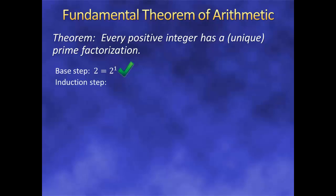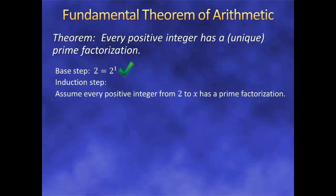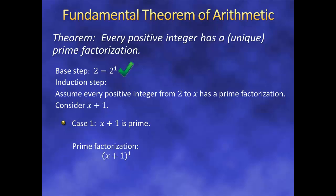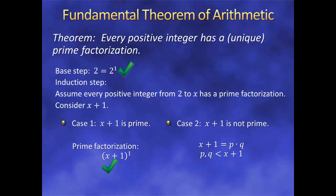Now for the induction step. Suppose that every positive integer from 2 to x has a prime factorization. Consider the number x+1. There are two cases. First, x+1 could be prime — if so, then we know its prime factorization: (x+1)¹. On the other hand, perhaps x+1 is not prime. Then by definition, x+1 can be split into two factors, call them p and q, neither of which is x+1 itself or 1. That means each of p and q is less than x+1. And since we assumed every number from 2 to x has a prime factorization, so should p and q. So the prime factorization for x+1 will just be the prime factorization of p times the prime factorization of q. That does it — our proof is complete.